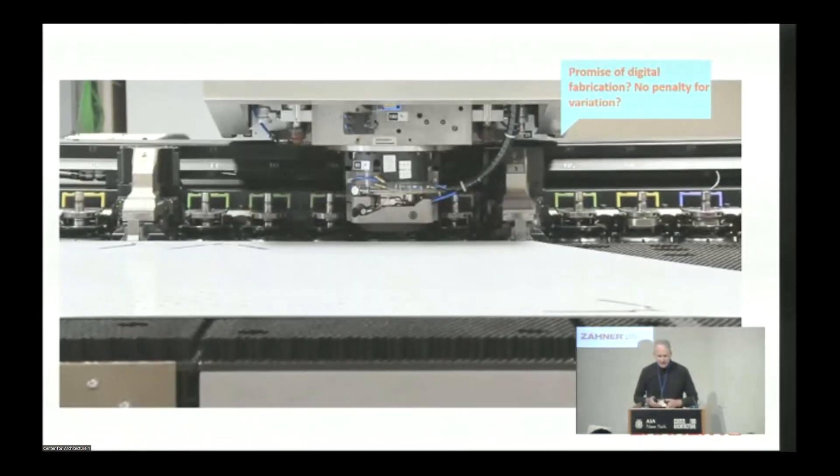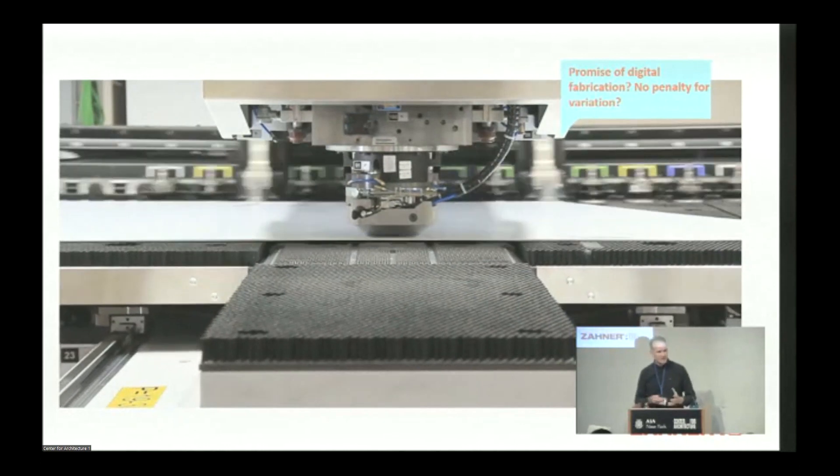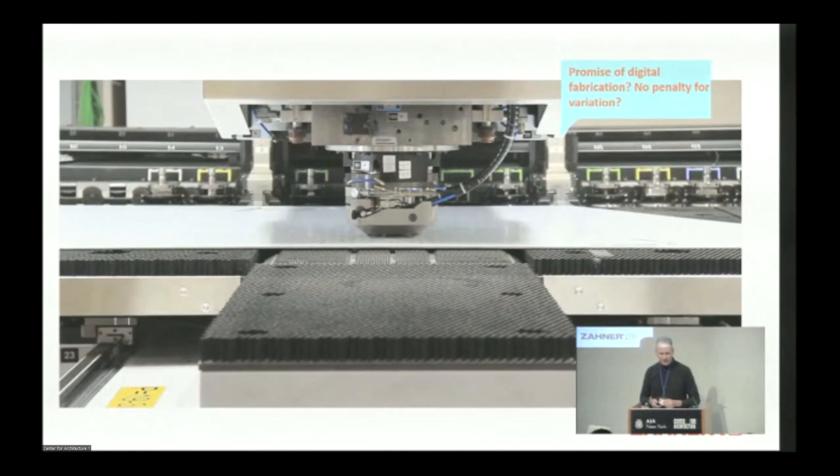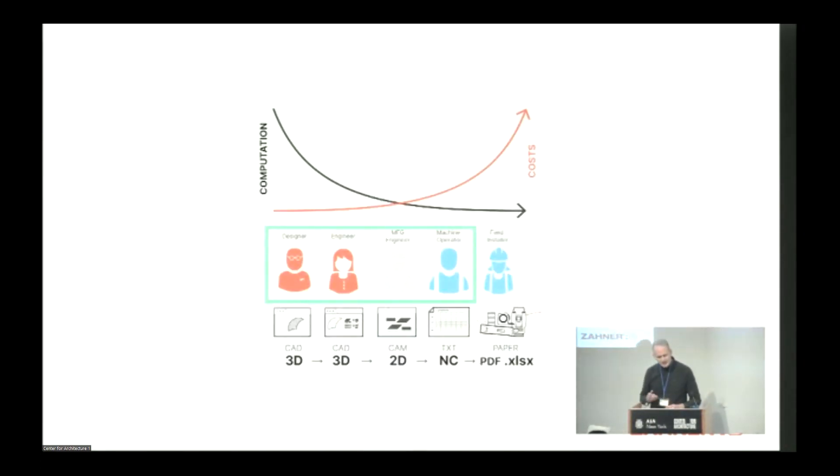The punching machine and digital fabrication in general has promised us no penalty for variation. The machine itself doesn't care if the triangle is this way or that way, if your pattern is one way or another. But there's always a disconnect between parties. Oftentimes, the design team has never met or spoken with the person who's going to be operating that machine.